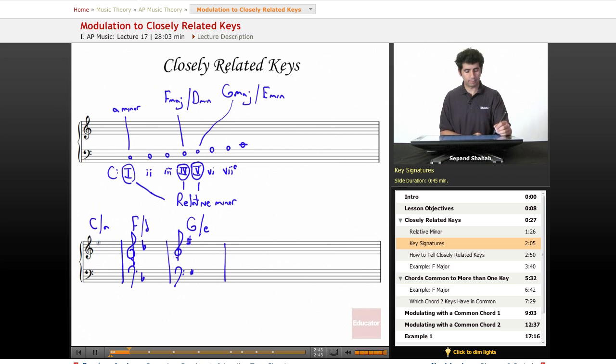And so what we find is that from our home key of C major, the other way to think about the closely related keys are the keys that only differ in one accidental from the key signature. And they're, of course, relative majors and minors. So C major has no accidental. So F major is close because it only adds one flat. And then G major is close because it only adds one sharp.